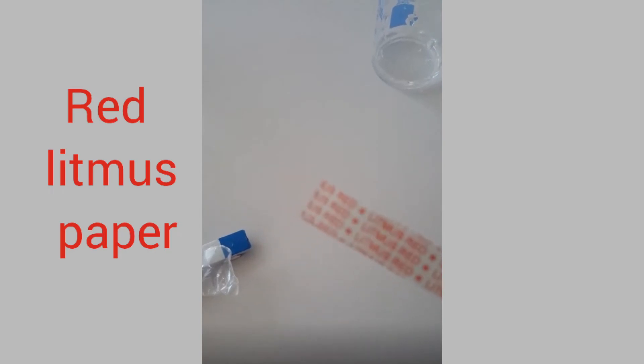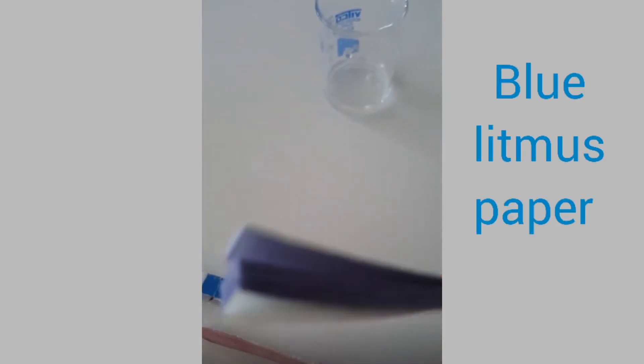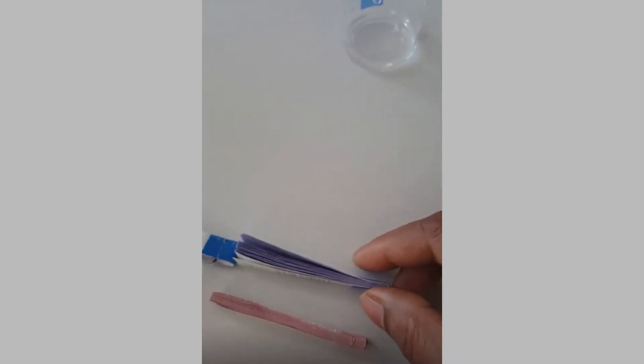I have taken litmus papers. One is red litmus paper that you can see in the video and the other one is blue litmus paper. These are the two litmus papers easily available in the lab to identify the unknown solutions.